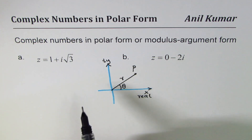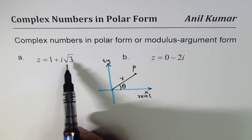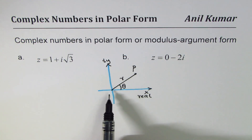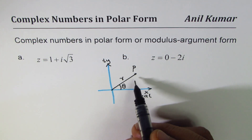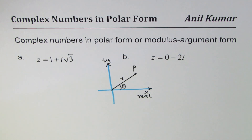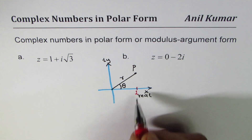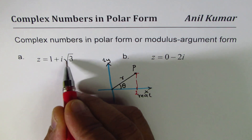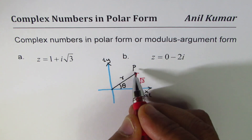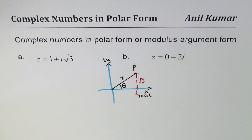So if we have z equals 1 plus i√3, it means along the x-axis the real part is 1, and the height is √3. Using the same diagram — it may not be exact but it helps to understand — the point P represents this complex number z = 1 + i√3. The real part is 1 and the imaginary height is √3.